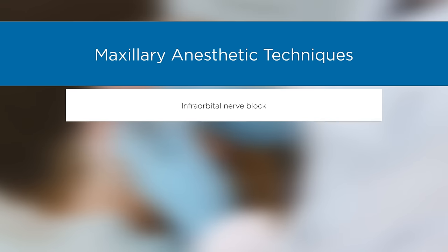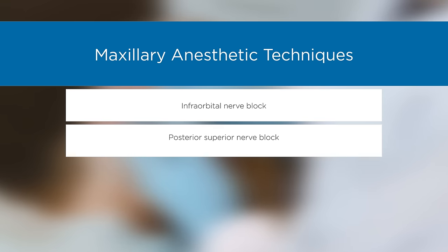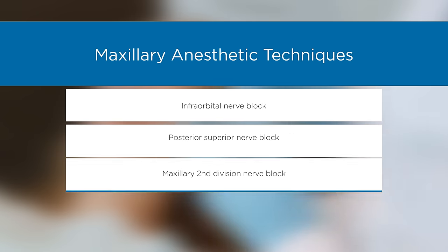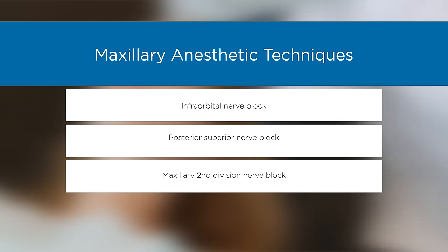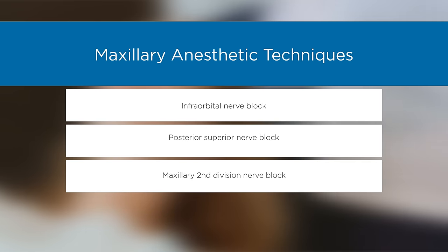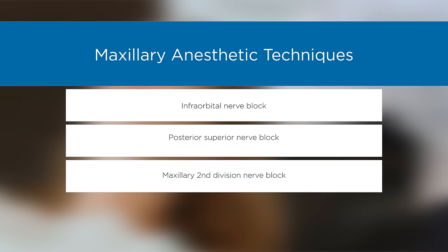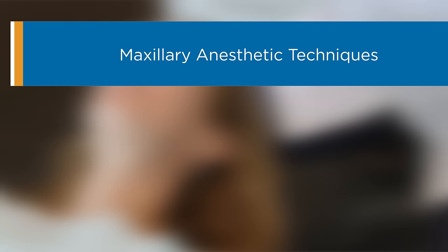Three other approaches for anesthesia in the maxilla may be alternatives to the supraperiosteal technique: the infraorbital nerve block, the posterior superior nerve block, and the maxillary second division nerve block. These techniques are easily learned and can be especially helpful with procedures involving multiple teeth.